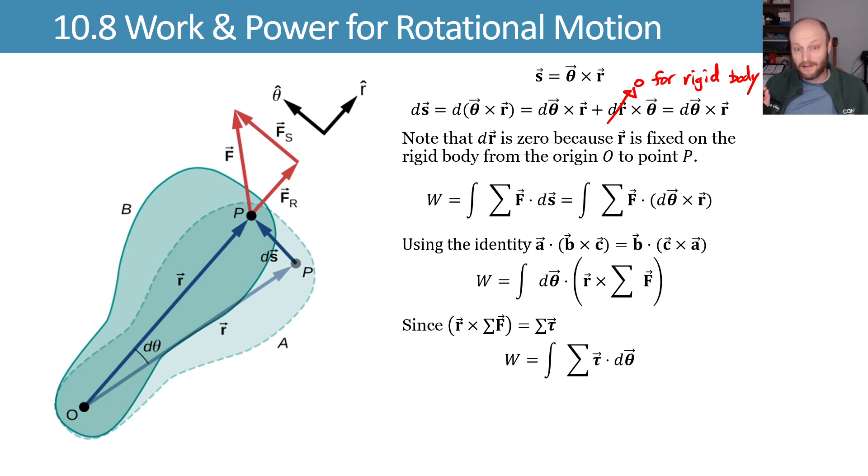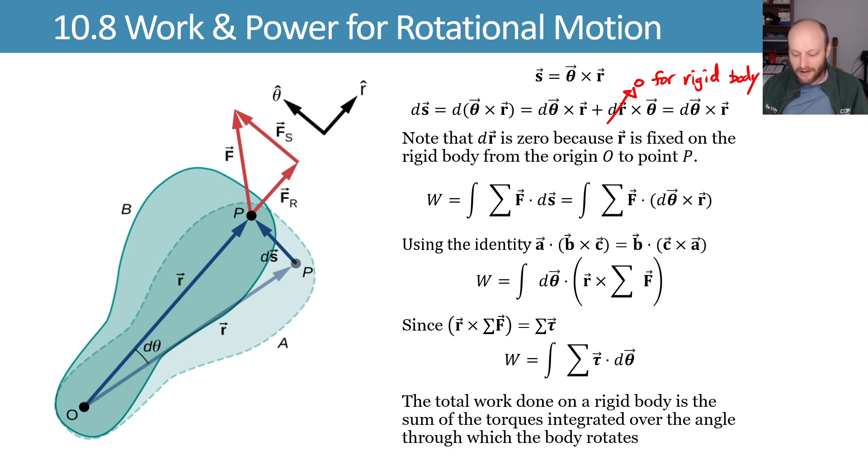Then we get the total work is equal to our sum of our torques dotted with d theta integrated over that movement. So our total work on our rigid body is the sum of the torques integrated over the angle through which the body rotates. Lovely.